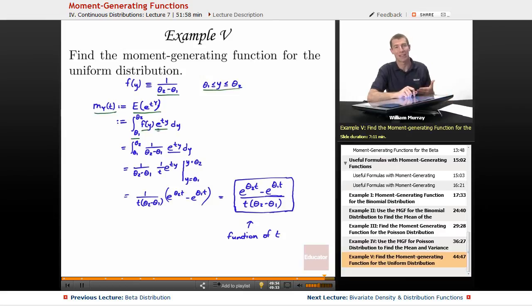Integral is like adding things up. The probability function is kind of the analog of the density function. So, instead of the summation of p of y, we have the integral of f of y, and then we still have e to the ty. f of y from above is just 1 over theta 2 minus theta 1. That comes from up above, and we'll pull that out since it's a constant. Now, we have to integrate e to the ty.